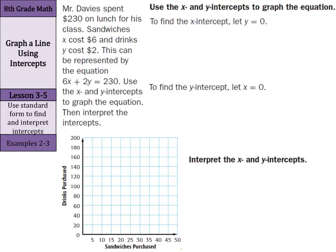Mr. Davis spent $230 on lunch for his class. Sandwiches, which were x, cost $6 and drinks y cost $2. This can be represented by the equation 6x plus 2y equals 230. Use the x and y-intercepts to graph the equation, and then interpret the intercepts.